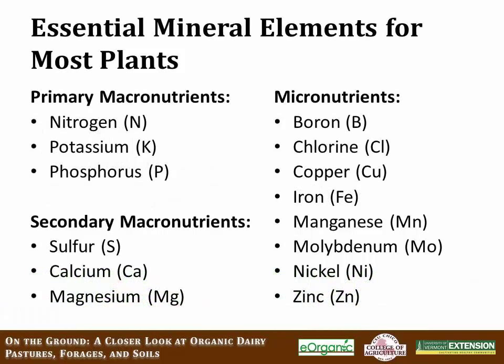There are many essential minerals that are required by plants, and these are grouped into three basic categories: primary macronutrients — nitrogen, potassium, and phosphorus — secondary macronutrients that include sulfur, calcium, and magnesium, and then micronutrients: boron, chlorine, copper, iron, manganese, molybdenum, nickel, and zinc, with a few others such as silica. These are categorized into three groups not based on one nutrient being more important than another.